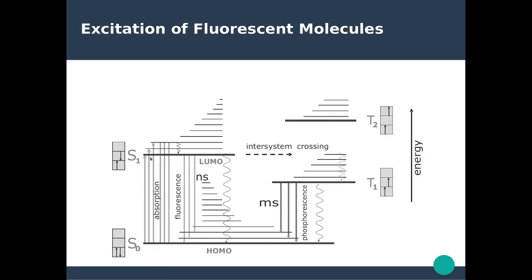We focus on the light absorption process that promotes electrons from the HOMO to the LUMO, and on the emission process when electrons undergo a transition from the LUMO back to the HOMO. Everything that happens in between are basically non-radiative decay channels, such as the emission of vibrations and collisions with the environment.